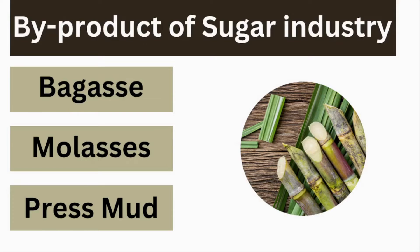Bagasse, molasses, and press mud are the major by-products of the sugar industries. The by-products of sugar industries are commonly used in different industries for different purposes, ranging from food and beverage to pharmaceutical and biofuels.